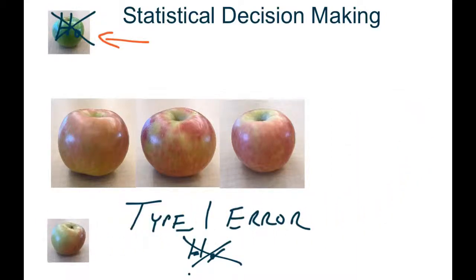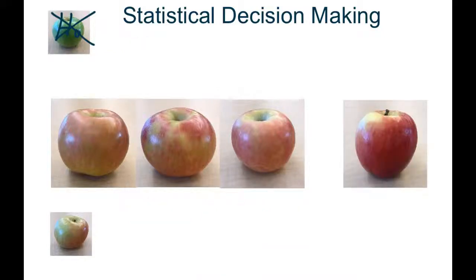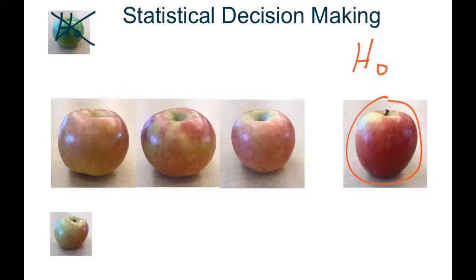Let's ask another question. We have a new apple — same hypotheses in play. Either this apple belongs to the population on the left and the only difference is individual variability, but it's still a Fuji belonging to the population — that's the null hypothesis. Or it is different enough that we're going to make the decision that it belongs to a completely different species of apple — that's the research hypothesis. So what do you think? It's reddish like the population, a little taller, a little skinnier maybe. The Fuji apples are nice and round, but there is a lot of variability in sizes.